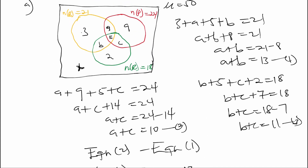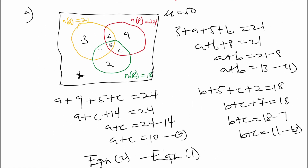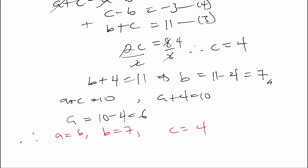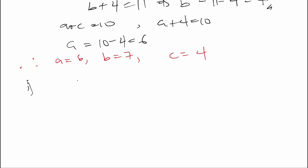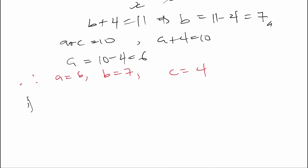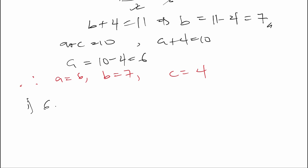So we update our Venn diagram: a = 6, b = 7, c = 4. For part B(i), the number of officers who chose plantain and beans only is a = 6 officers.